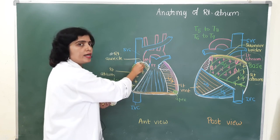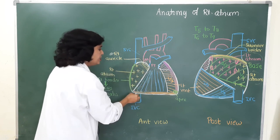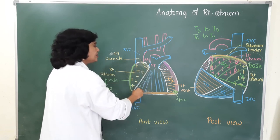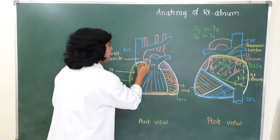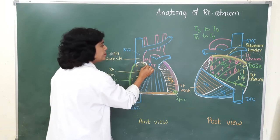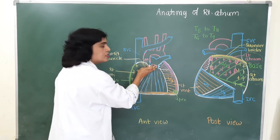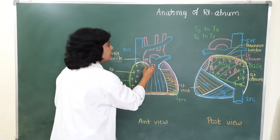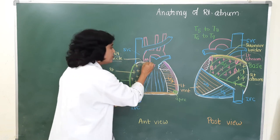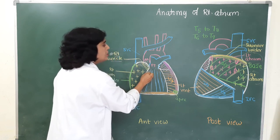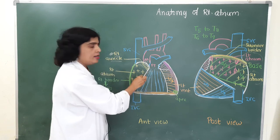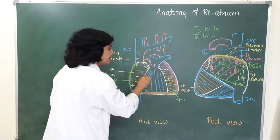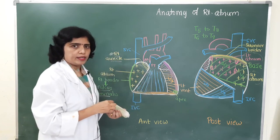The sulcus terminalis corresponds to the crista terminalis present within the right atrium. The right atrium receives blood from the superior vena cava at its upper end and the inferior vena cava at its lower end. It is an elongated chamber, and from its anterior superior part it shows an ear-like appendage passing towards the left side called the right auricle.